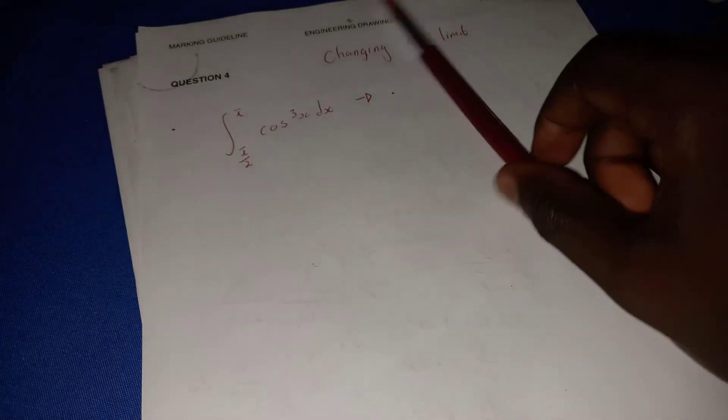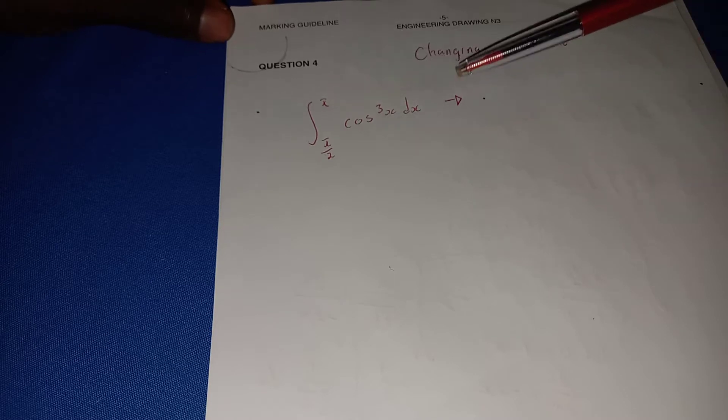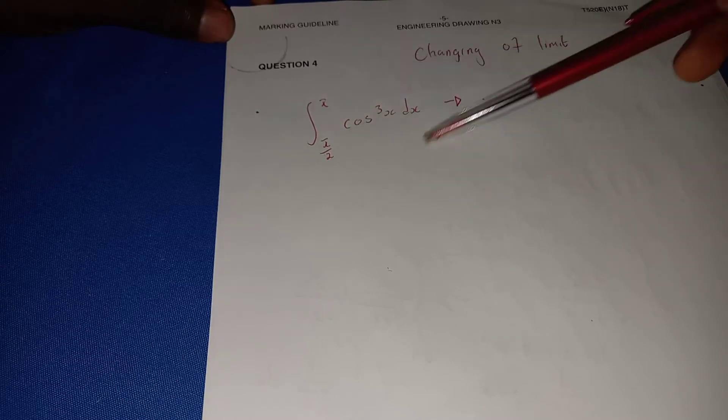We are back again with our example of integrals. On this question we are going to do what you call changing of limits. We are given these two intervals, pi over two and pi, so we're going to simplify this question and also change these intervals.